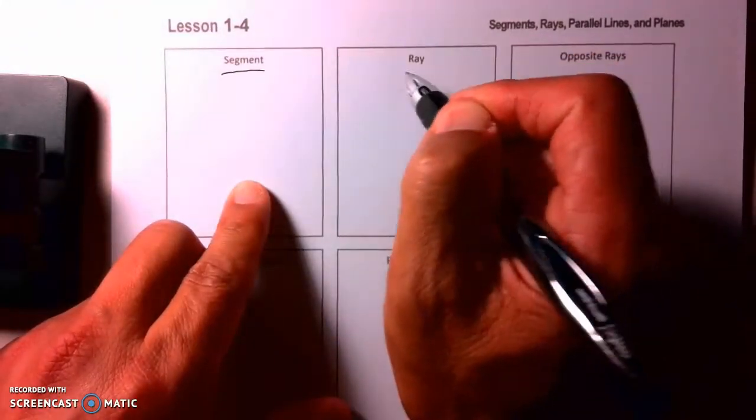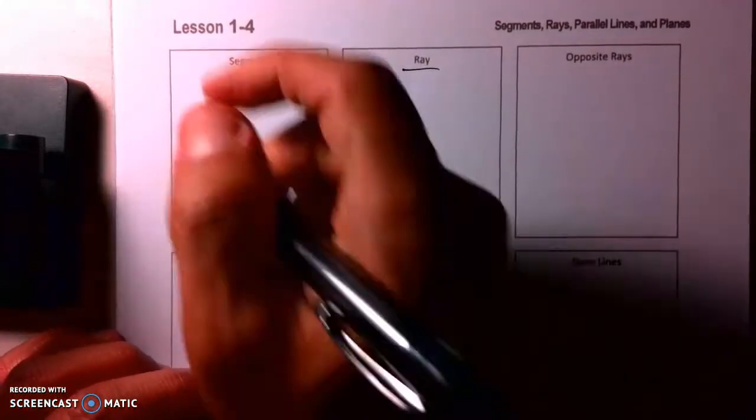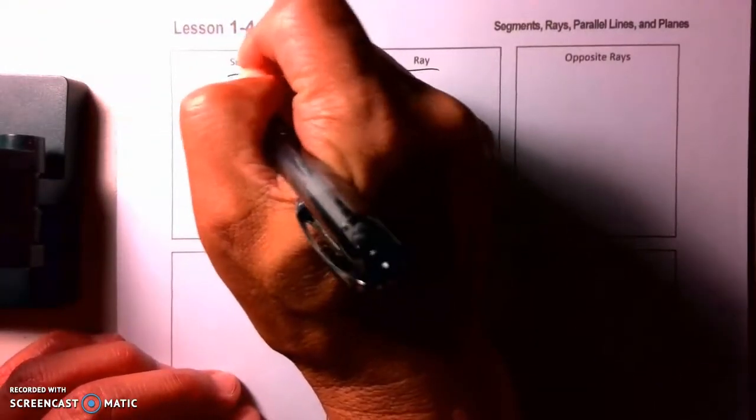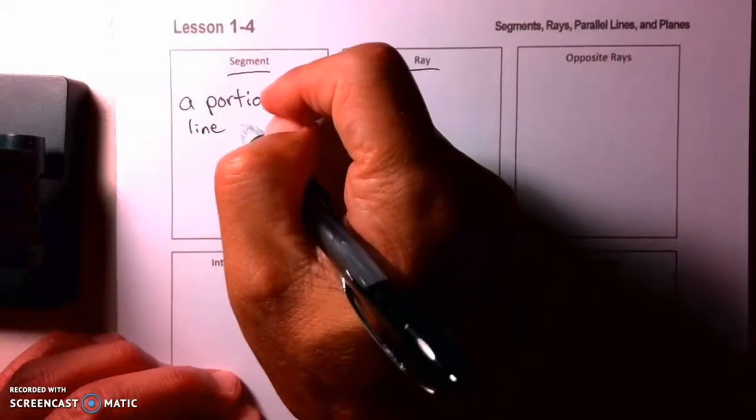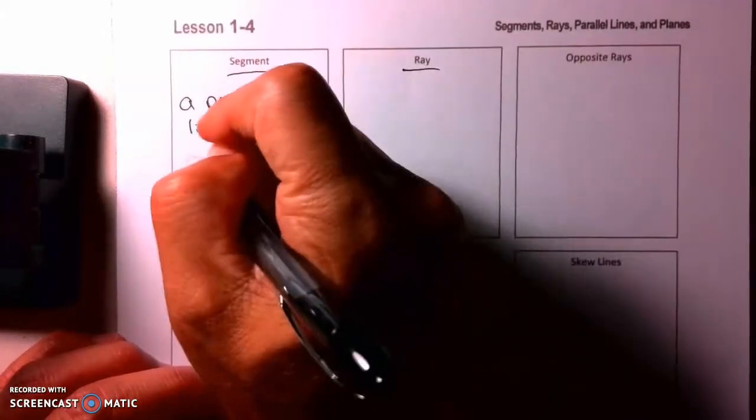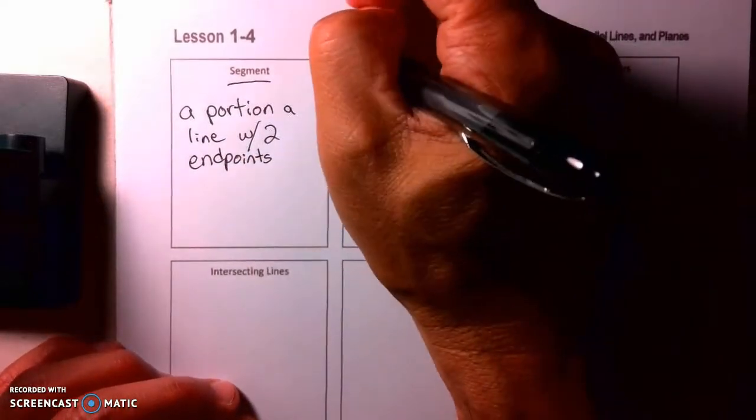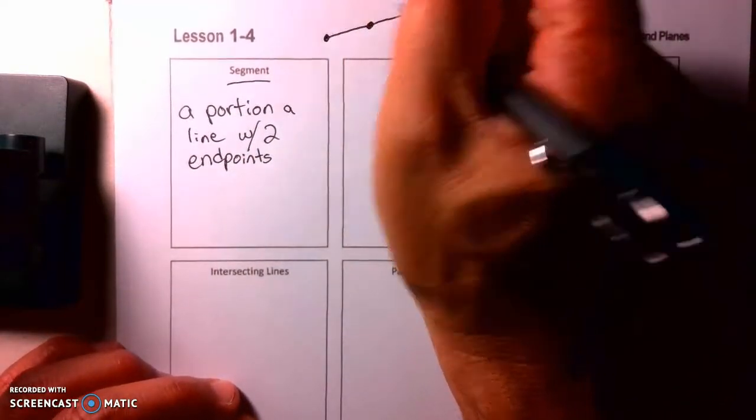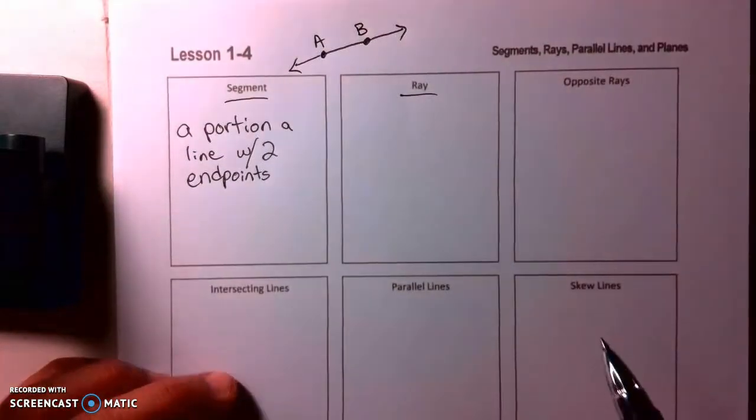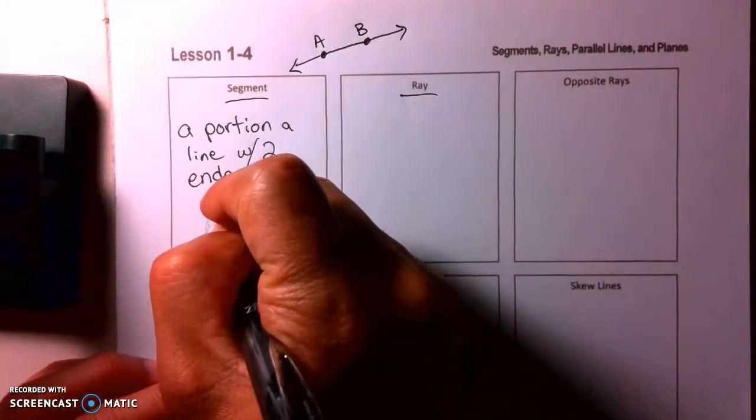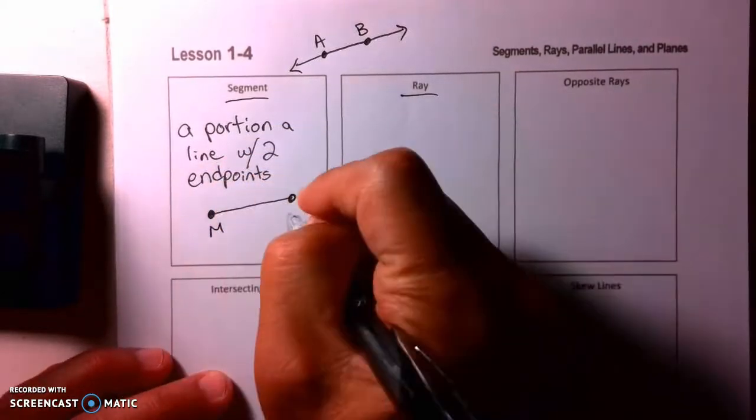The first one here is a segment. A segment is basically a portion of a line. Now a line is something that goes on forever - a portion of a line with two endpoints. So if you recall from 1-3, we had these lines that didn't stop. They went on forever, and we would call this line AB. Well now we're going to have a segment, which is literally something that stops. So I can say MN.